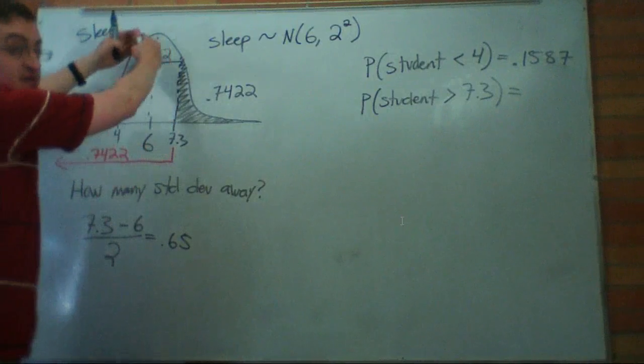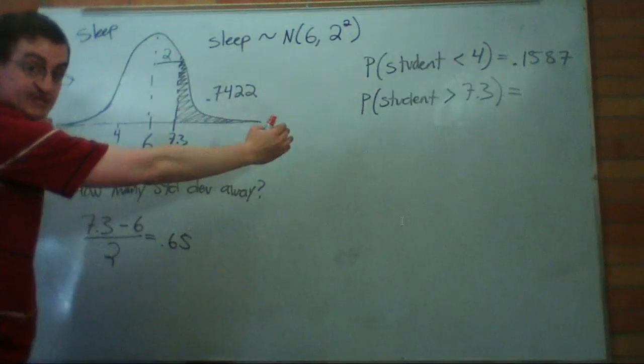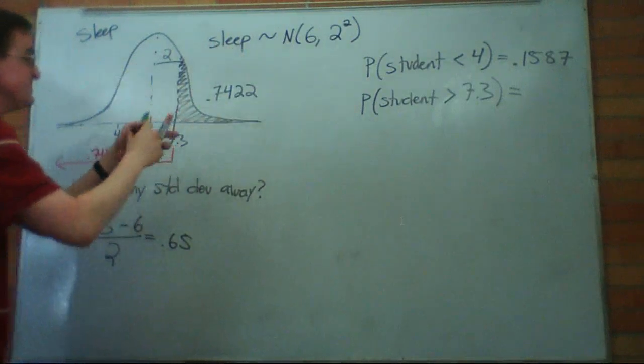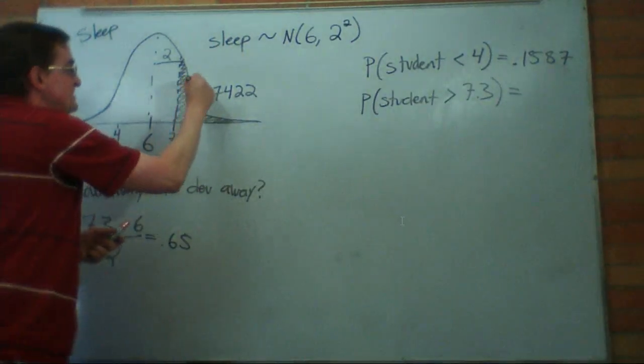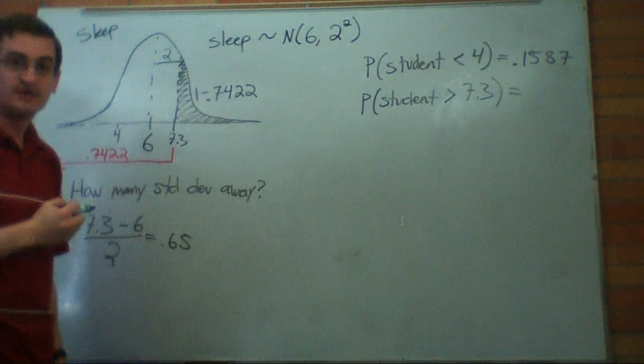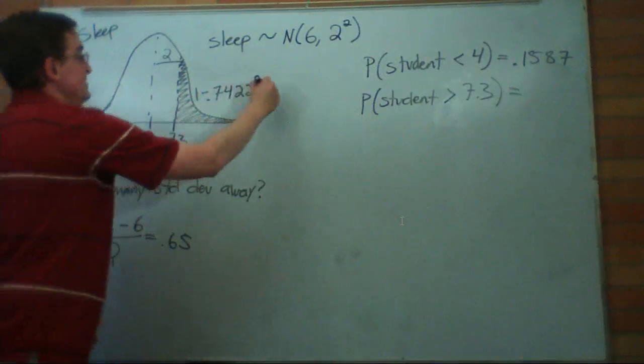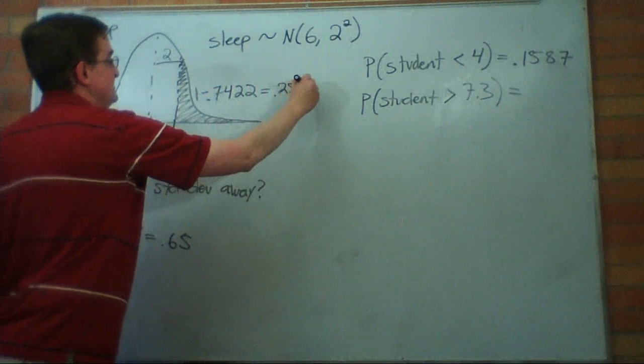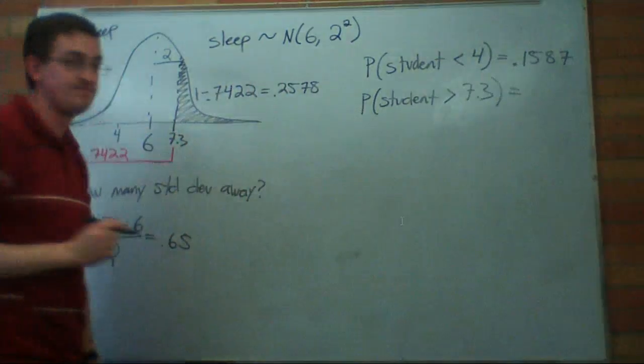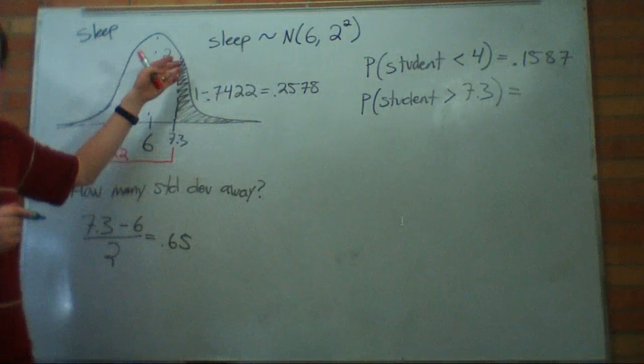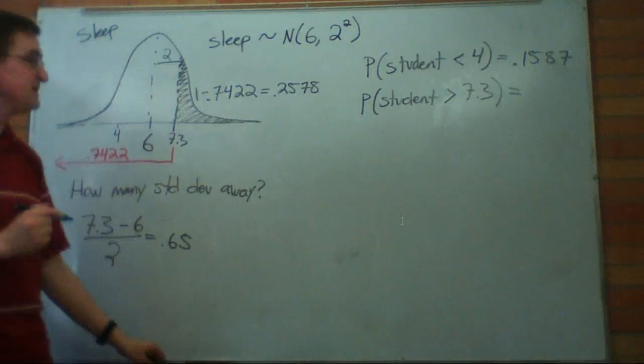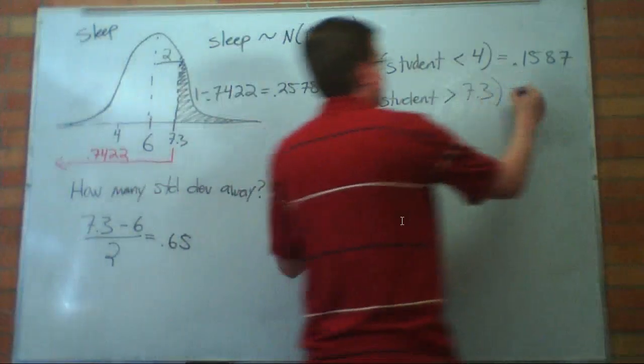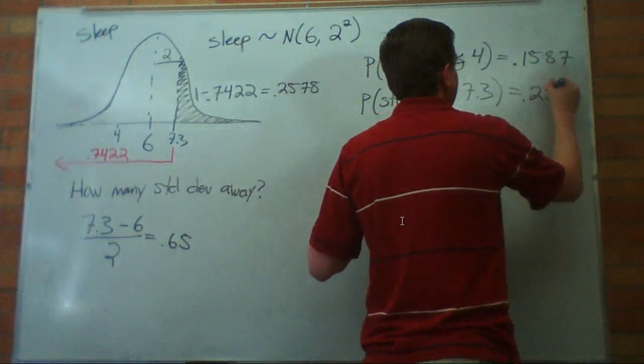We're going to do the trick of everything adds up to 100 percent. If this is 74 percent, this piece must be 1 minus 0.7422. That's the area to the right of this, which equals 0.2578. Based on my picture, does this look like it could be about 25 percent? Okay, yeah. That seems more reasonable. That's our answer to this question. It's 0.2578.